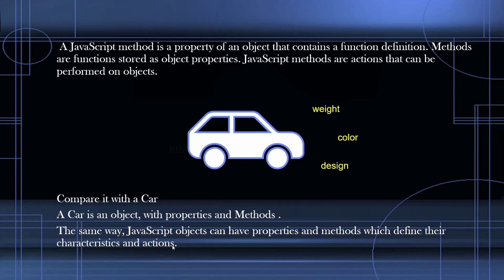When it comes to methods — the actions — we have brake, using brake we can stop the car, we have engine, we have wheels, using wheels the car will move, we have door open and close. These are the basic actions which we will be performing, and some basic actions which the car will be performing when we command it. So properties are the characteristics of a car, and methods are the actions performed on or by the car.